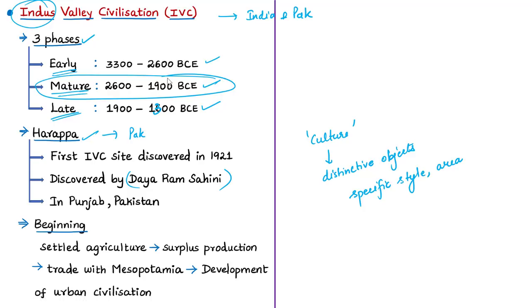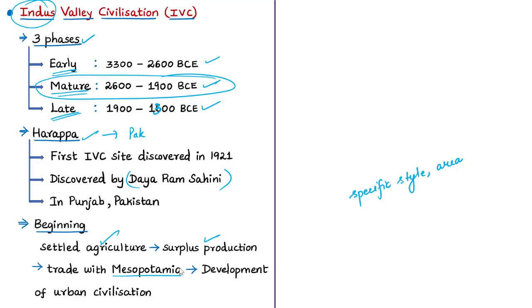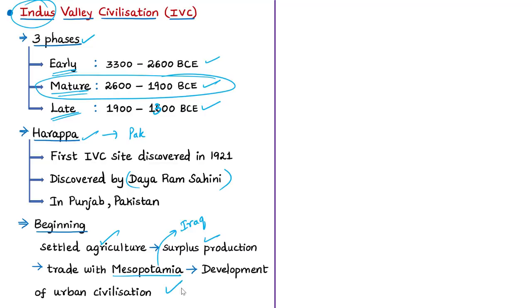The origin of the Indus Valley Civilization is believed to lie in ancient village communities in western India, where settled agriculture produced surplus crops. This surplus production resulted in trade with other areas such as the Mesopotamian civilization in present-day Iraq. Trade profits led to the development of cities, and during the mature Harappan phase, the civilization reached its peak in terms of trade and urbanization, evolving into one of the largest urban civilizations.